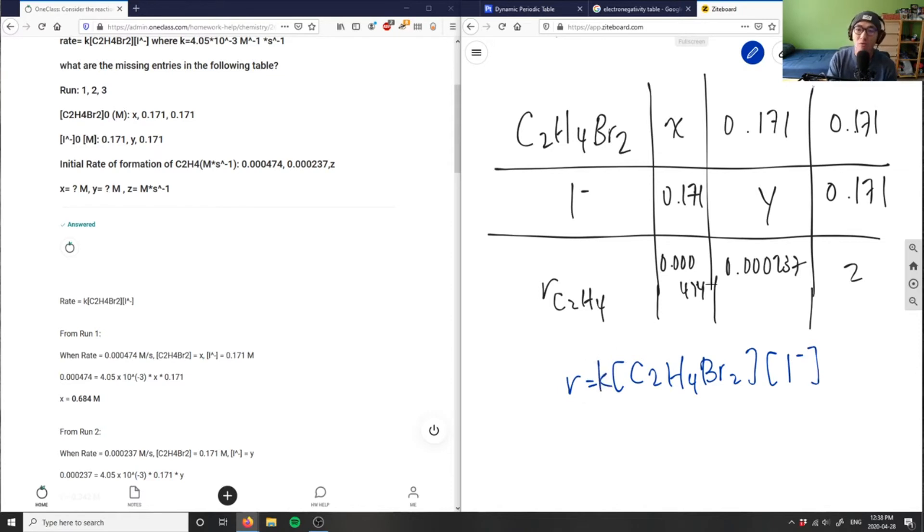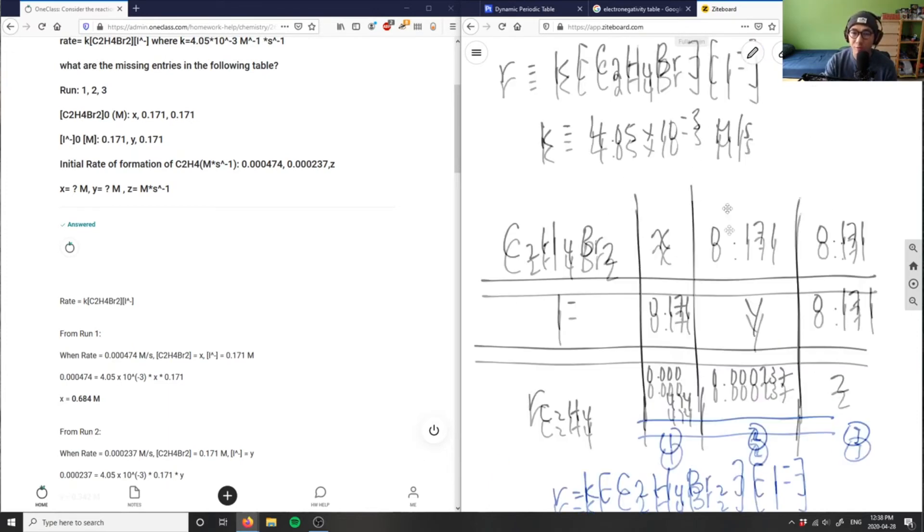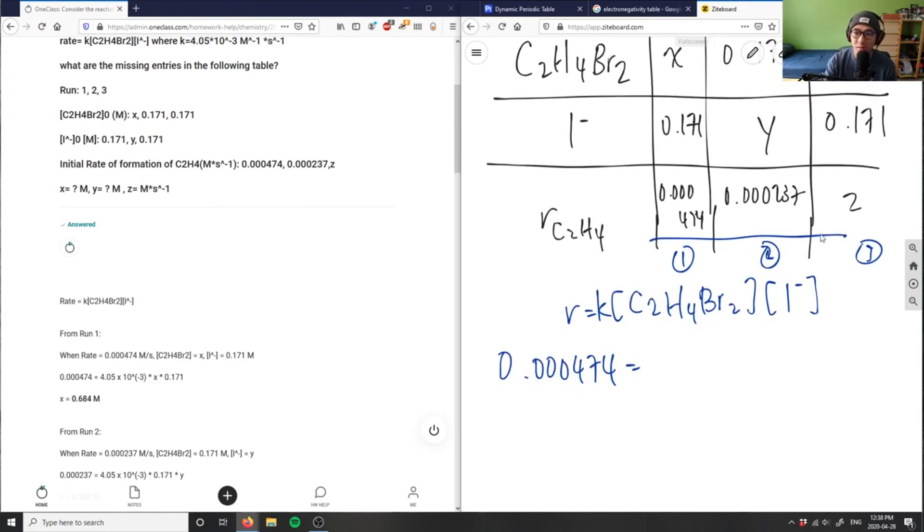Let me show you what I mean. The rate equals K times C2H4Br2 times I minus, right? I'm missing the K here. This is trial one. Let me write this on the bottom because you can't see this. This is run one, two, and three. For run one, I can plug in the rate here.